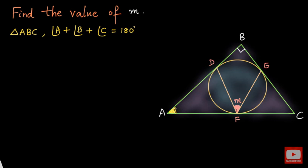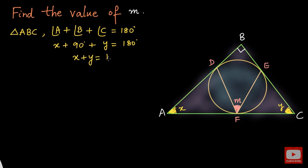So angle A will be named as X and angle C as Y. According to this relation, X plus 90 plus Y will be equal to 180 degrees. Taking 90 to the other side, we get X plus Y equal to 180 minus 90, so X plus Y equals 90. Let me take this as equation number 1 — this will be a useful relation.